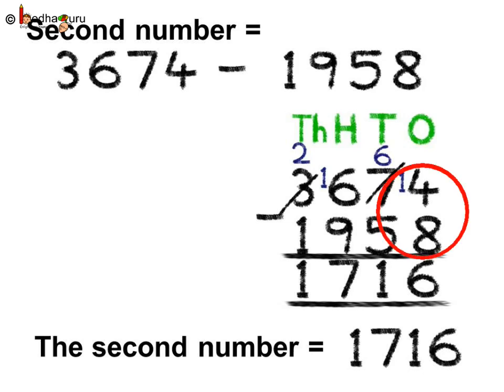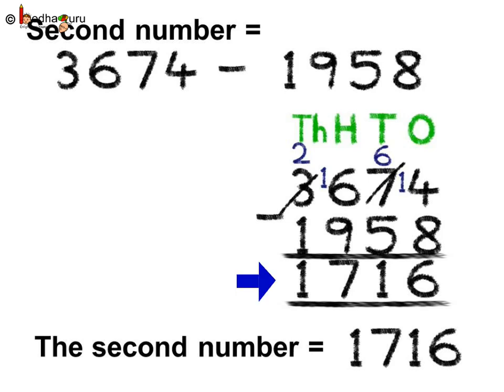Let us subtract 3,674 minus 1,958. Starting from the ones place: 4 minus 8, so we borrow from the tens place. 14 minus 8 is 6. Coming to the tens place — due to lending, the tens place became 6. 6 minus 5 is equal to 1. Now, coming to the hundreds place: it is 6 minus 9, so we need to borrow from the thousands place. Now the hundreds place becomes 16. 16 minus 9 is 7. Lastly, at the thousands place — due to lending, 3 became 2. So, 2 minus 1 is 1. Thus, the answer is 1,716. The second number is 1,716.